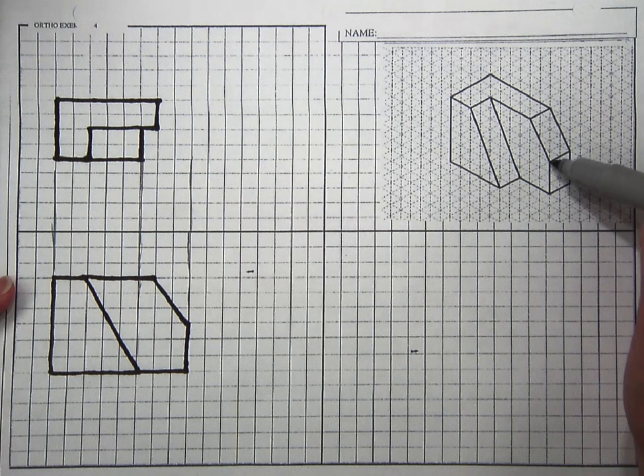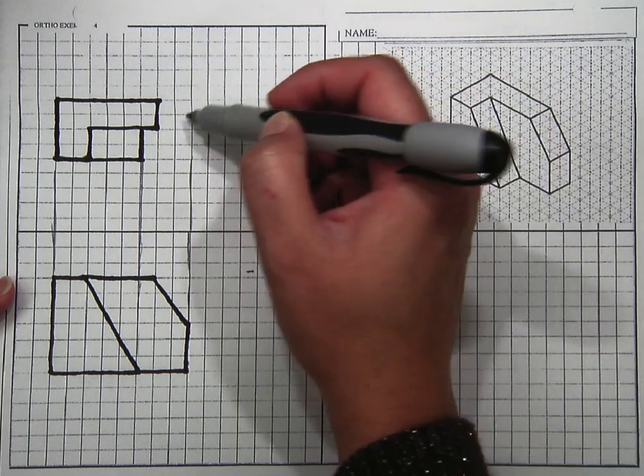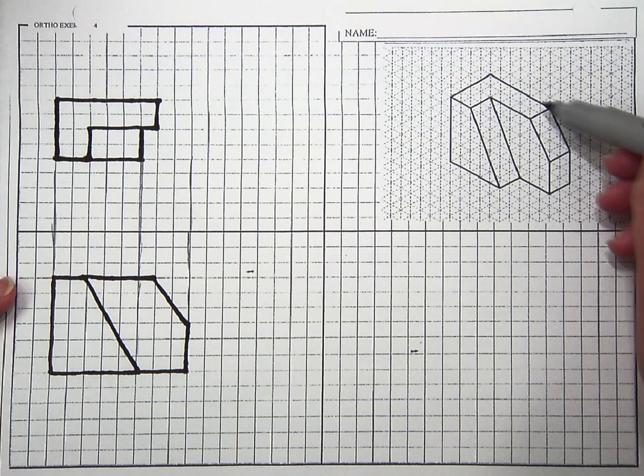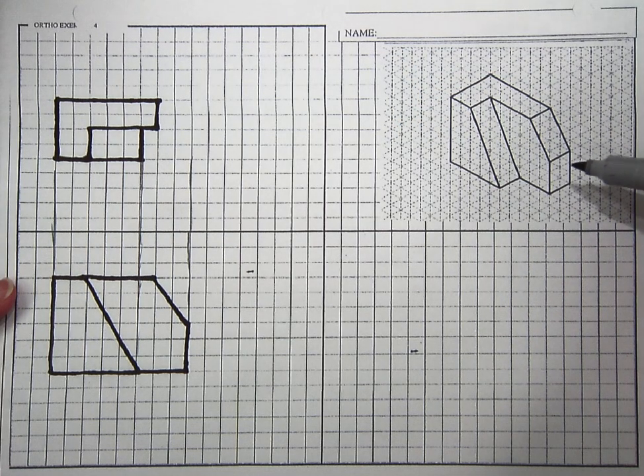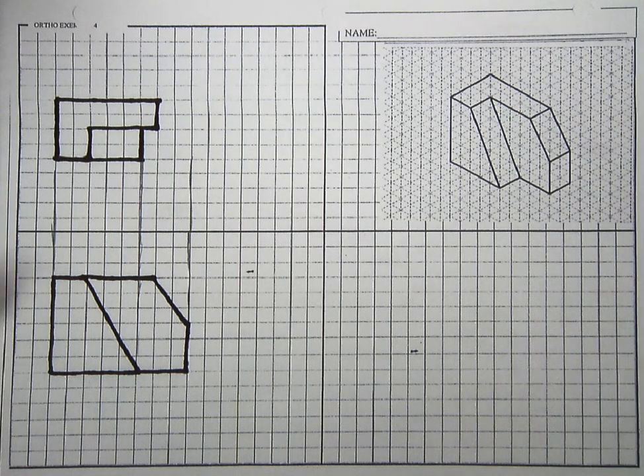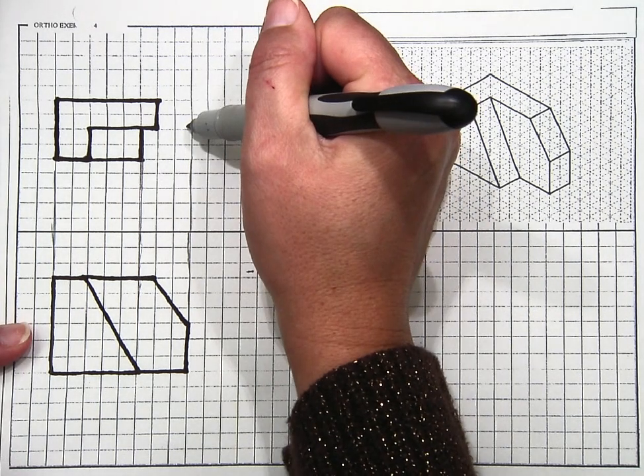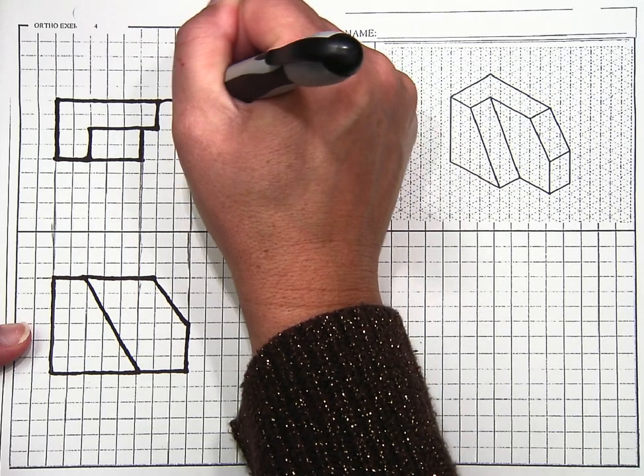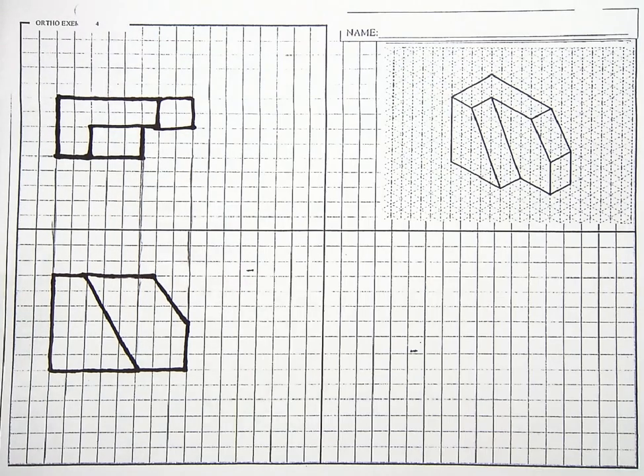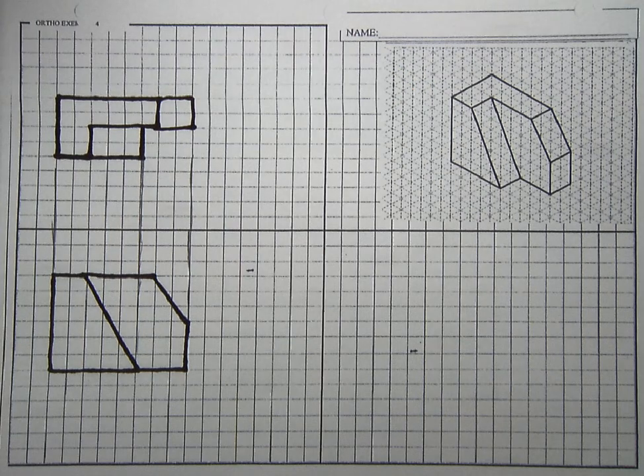I also have a line here that's going to show up. So from here to here, we have a change of depth. And it's going to line up right here with this construction line I already drew. So that's what my top view is going to look like.